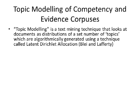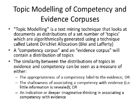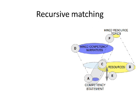When we can build big corpuses of text, we can then use a technique called topic modelling to identify the themes that come out of those corpuses. Topic modelling is a technique which regards documents as relations of topics which can be algorithmically generated. A competency corpus and an evidence corpus, generated from the Internet, will contain a distribution of topics. We can look at the distribution of topics between the two corpuses, and the similarities of the distribution can be a measure of either the appropriateness of a competency label to the evidence, the shallowness of associating a competency with evidence, or an indication of some deeper, imaginative connection that you're making.